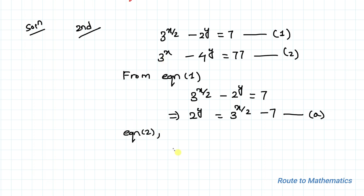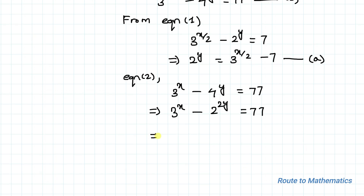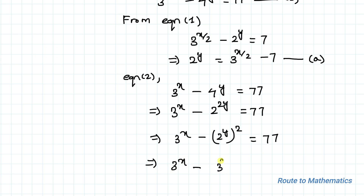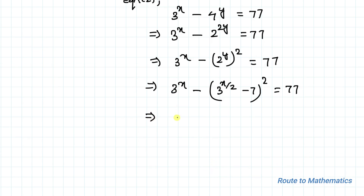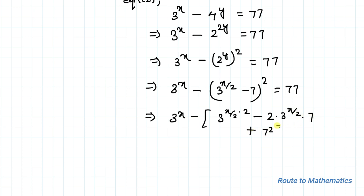From equation 2, 3^x − 4^y = 77, and since 4^y = (2^y)², we write 3^x − (2^y)² = 77. Substituting equation A, we get 3^x − (3^(x/2) − 7)² = 77. Expanding using (A − B)² = A² − 2AB + B², this becomes 3^x − 3^x + 14 × 3^(x/2) − 49 = 77.